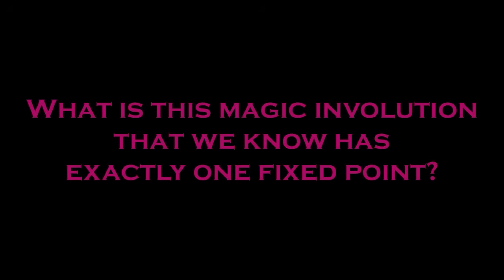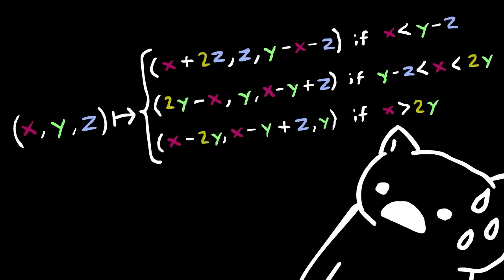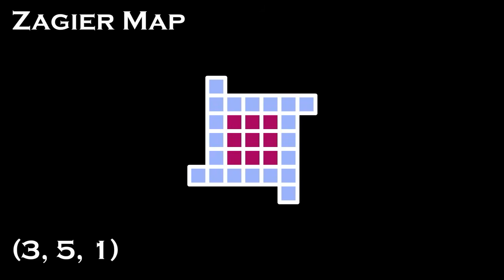So what is this magic involution that we know has exactly one fixed point? As it turns out, it's a bit complicated. But this does actually have a nice geometric idea, so I'll explain this involution visually. What this involution essentially does is make the central square for a windmill as big as possible. If the central square is already as big as it can be, it makes it as small as possible by extending the arms.